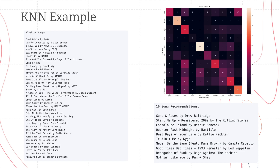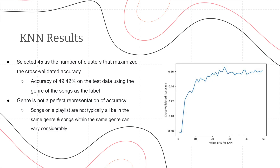In this example, we used the playlist on the left to generate the song recommendations we can see on the right, and we have the confusion matrix above. We selected 45 as the number of clusters that maximizes the cross-validation accuracy, which is an accuracy of 49.42%. With an accuracy of about 50%, genre is not a perfect representation of accuracy. This makes sense because songs on a playlist aren't always from the same genre, and songs within the same genre can vary considerably.